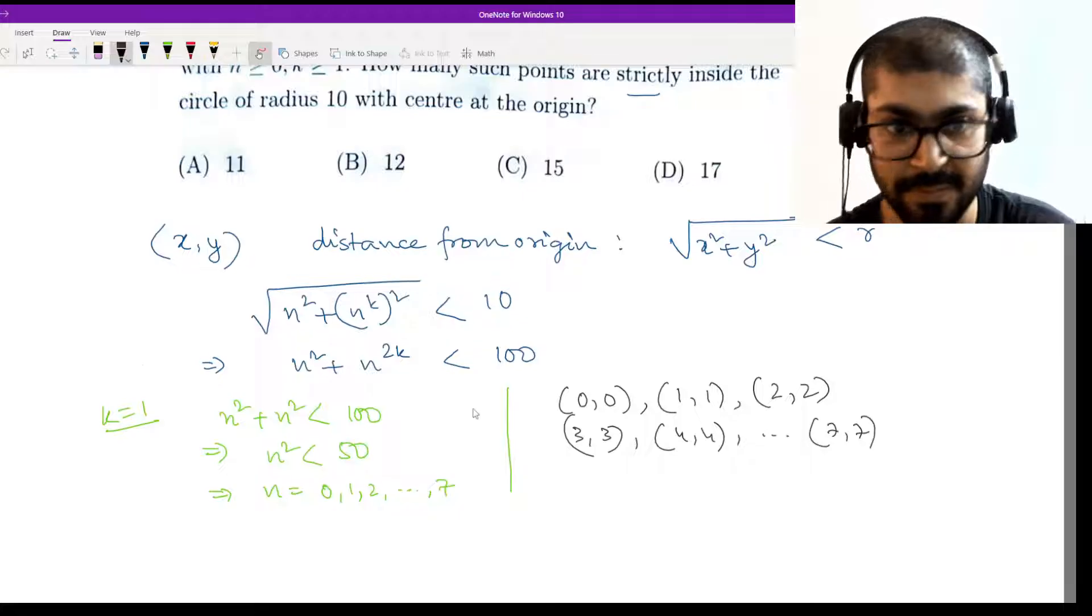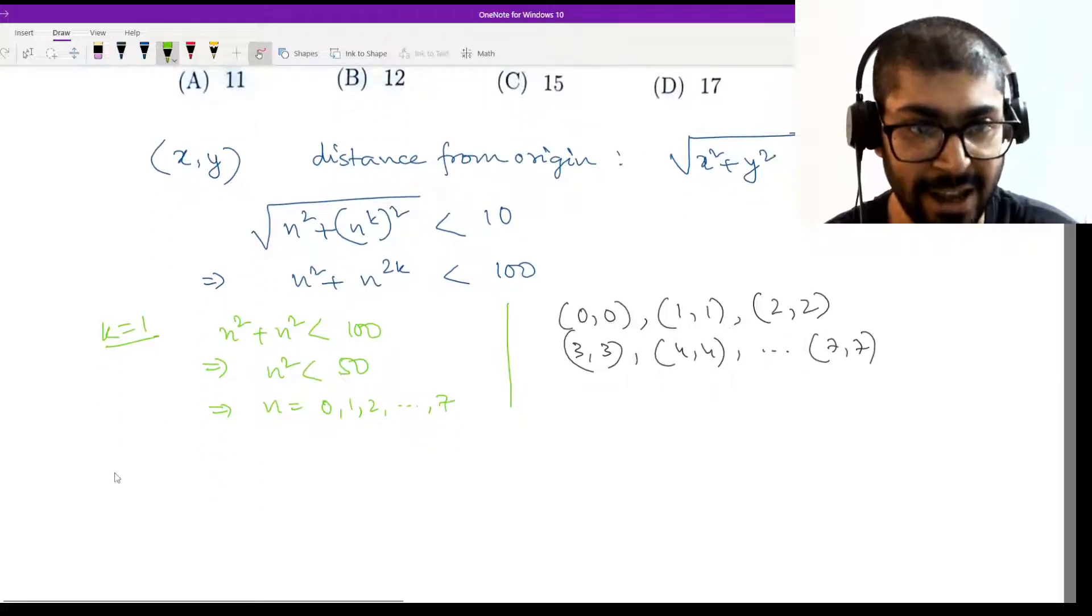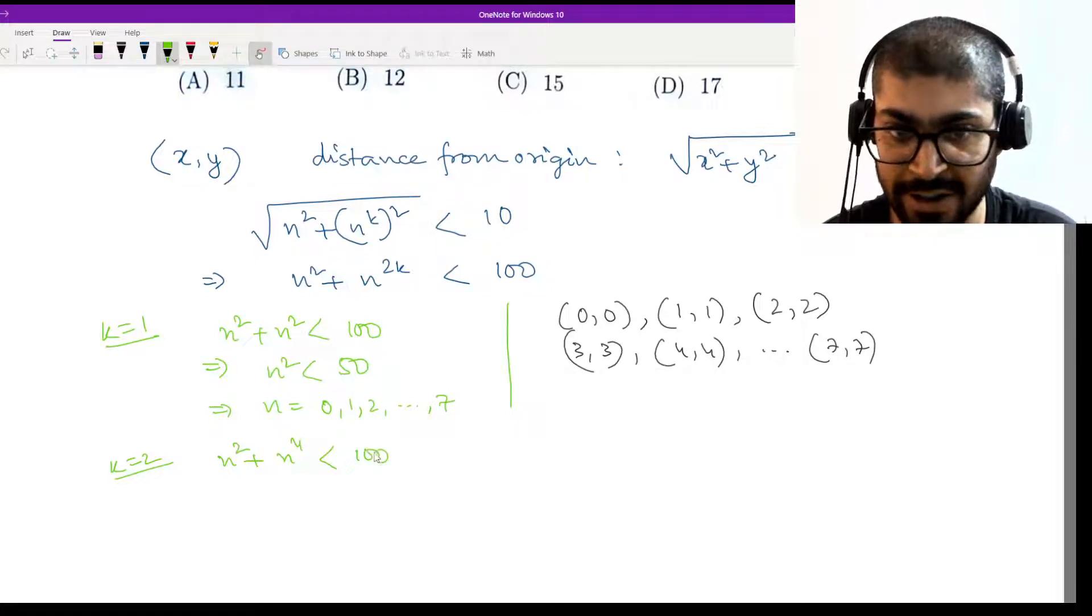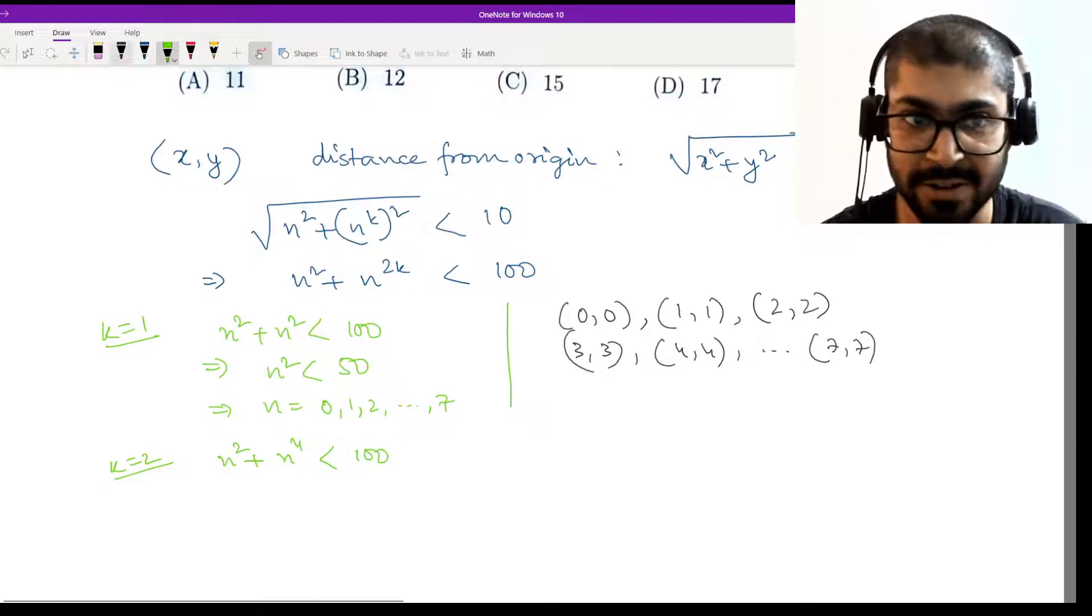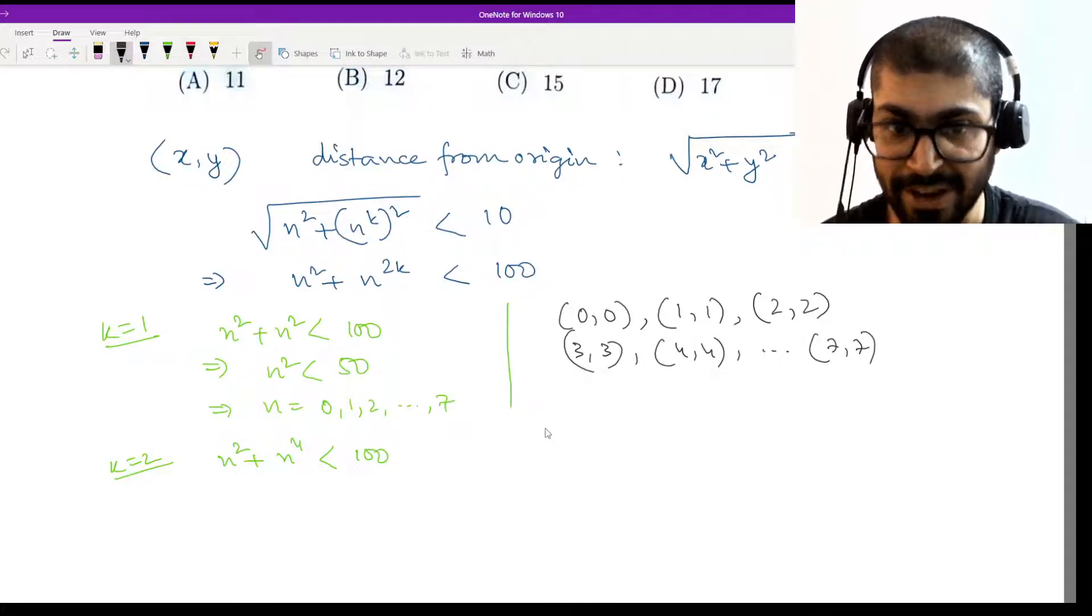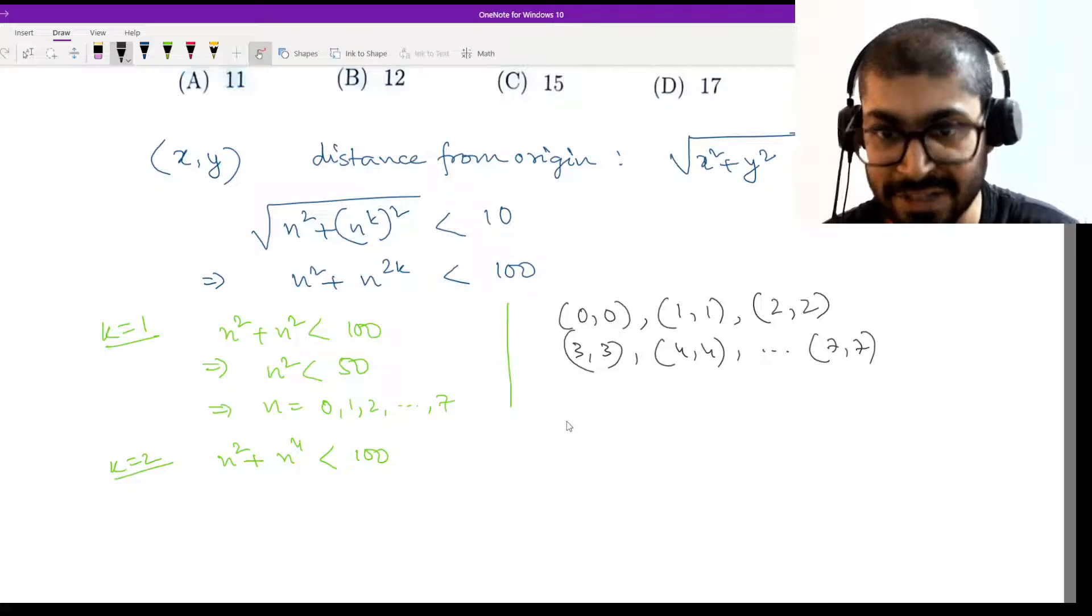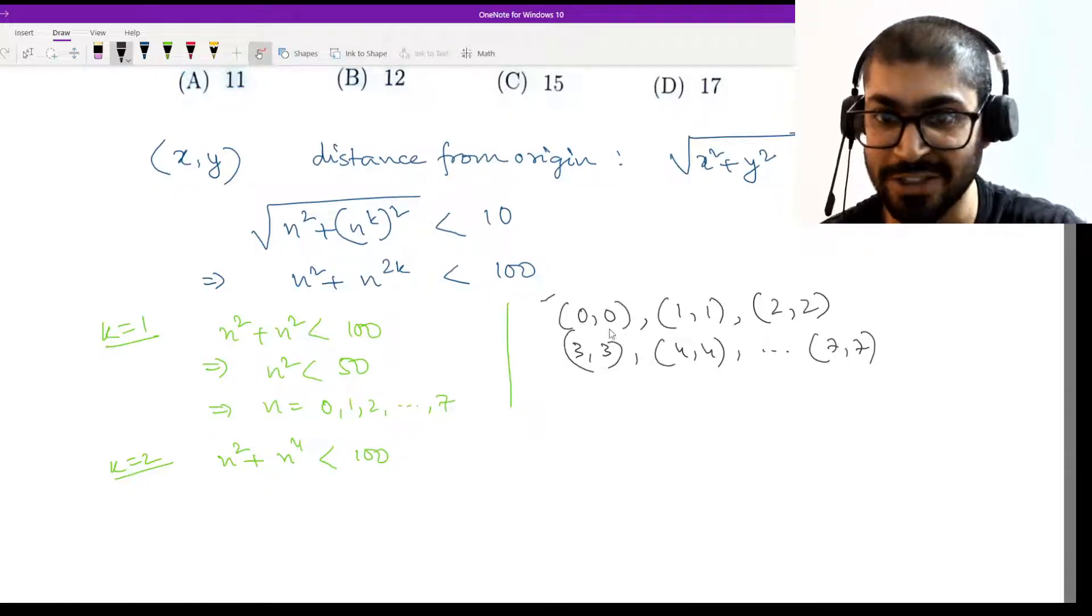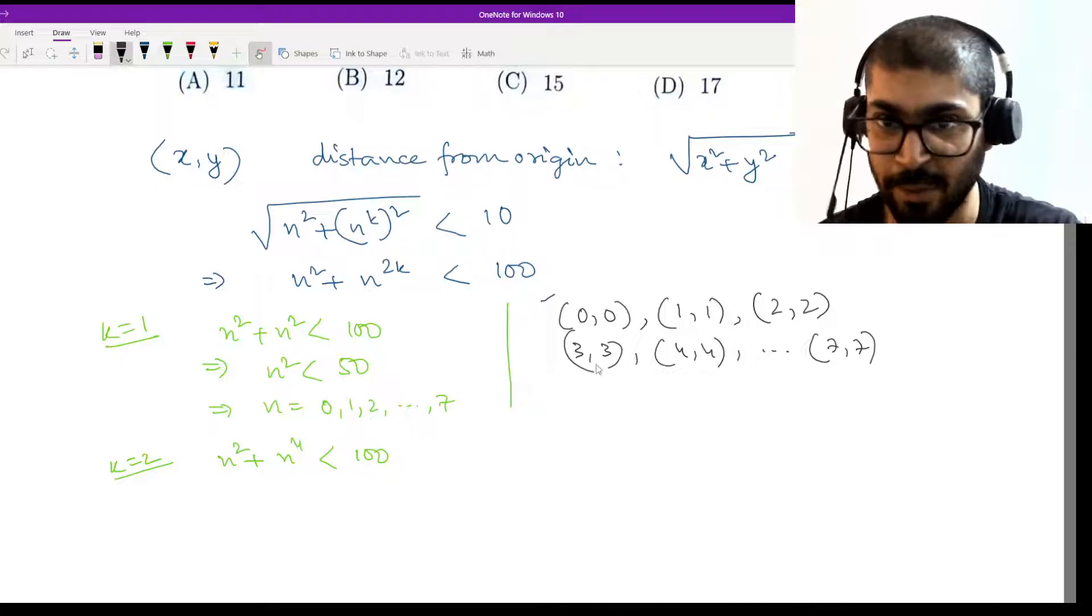For k equal to 2 we have n² + n^4 less than 100. This grows very fast so we would have to check individual points, start from n equal to 0. If I take n equal to 0 then (0,0) is coinciding with the last (0,0) that we had, so not a unique point.